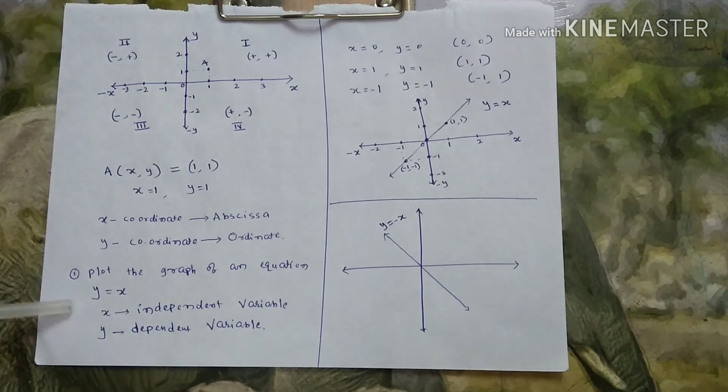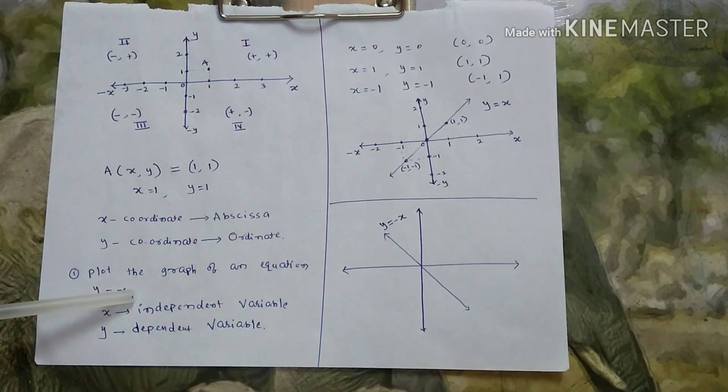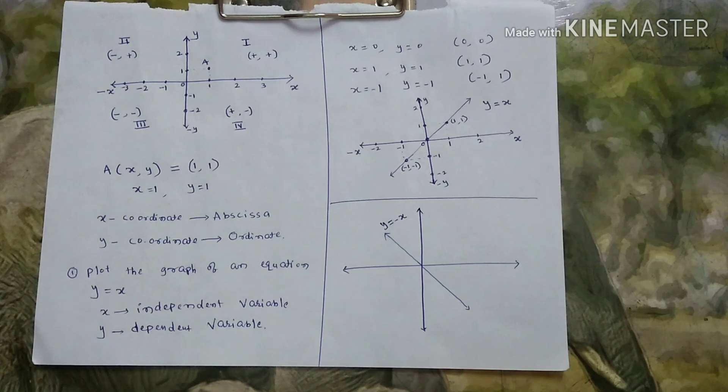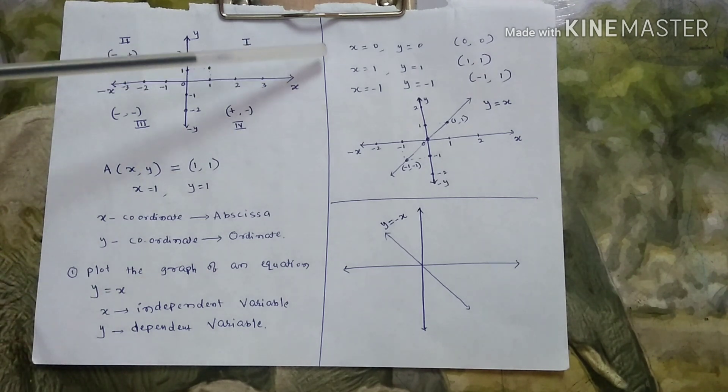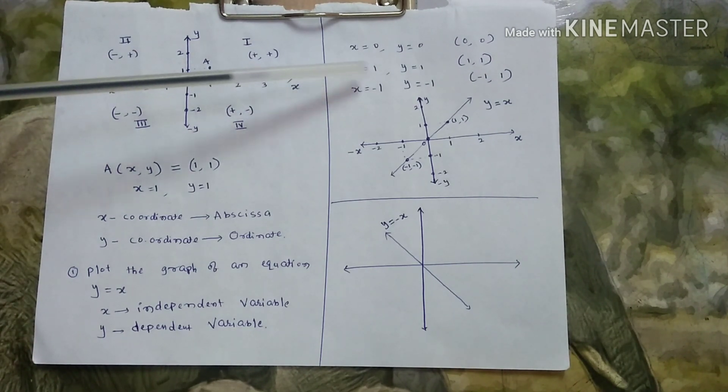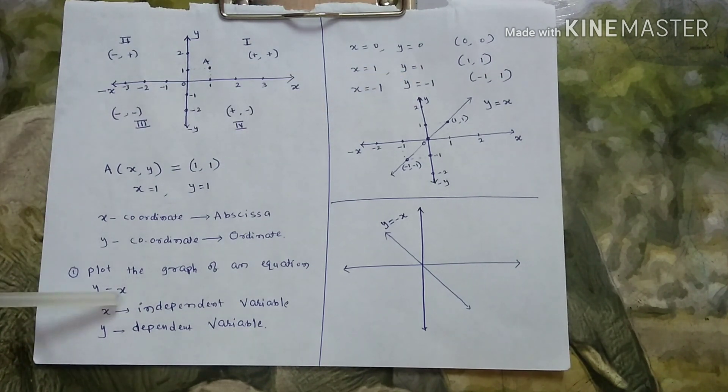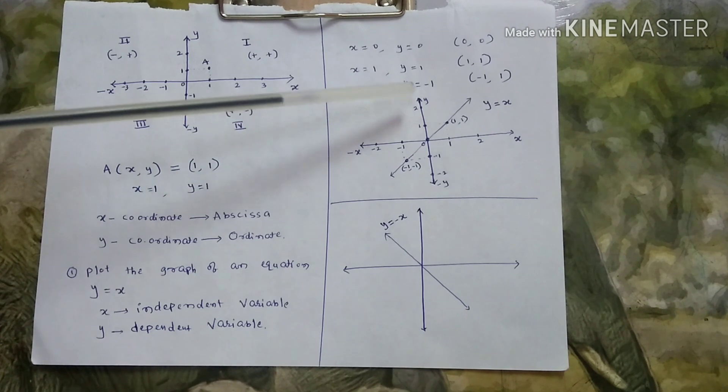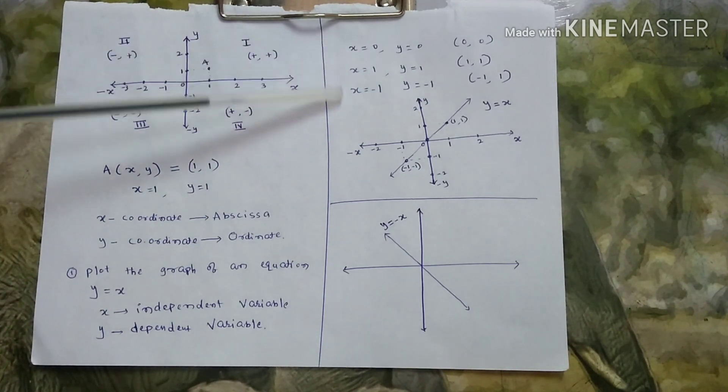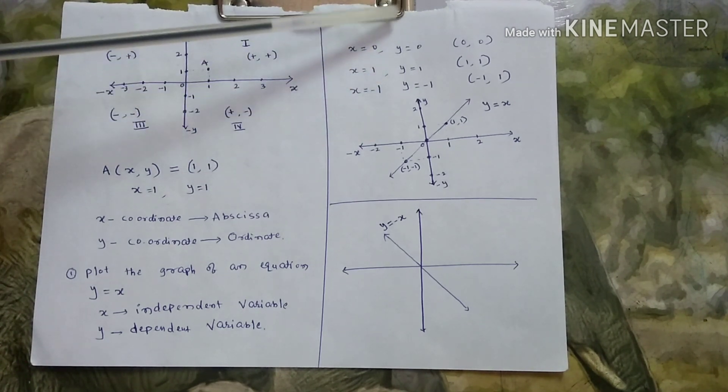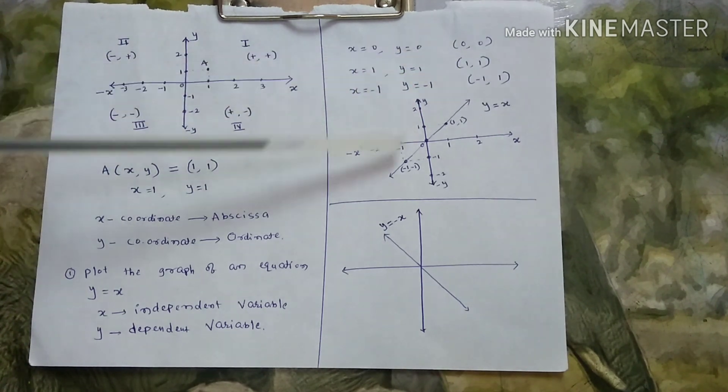So, y is function of x. Y changes as per the x. So, that is why y is dependent variable. Y also changes as per dependent. Y depends on x. You see here, you keep x equal to 0, Y also becomes 0. So, 0 comma 0 point. X is equal to 1. Y also 1. Because, y equal to x equation. So, 1 comma 1. You take, x is equal to minus 1. Then, y also minus 1. How x is changing? Accordingly, y is changing. That is why x is independent variable. Y is dependent variable.